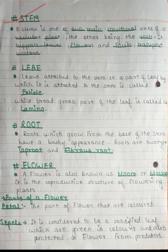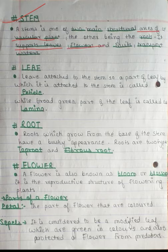Now we will talk about the stem. The stem is one of two main structural axes of a vascular plant, the other being the root. It supports leaves, flowers, and fruit, and transports water.